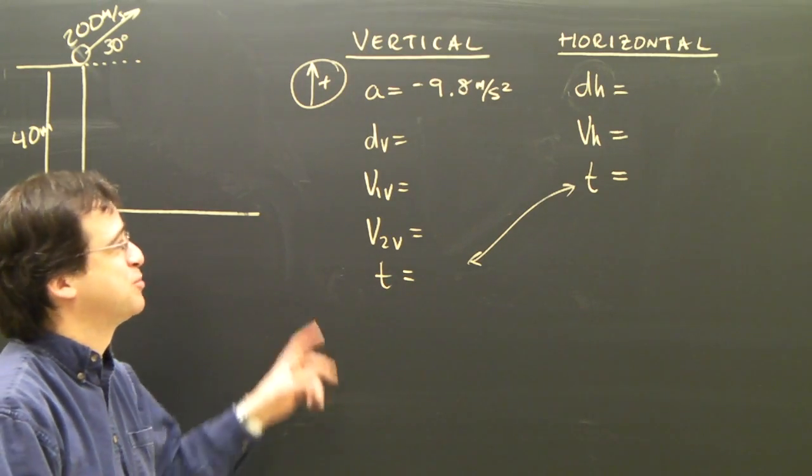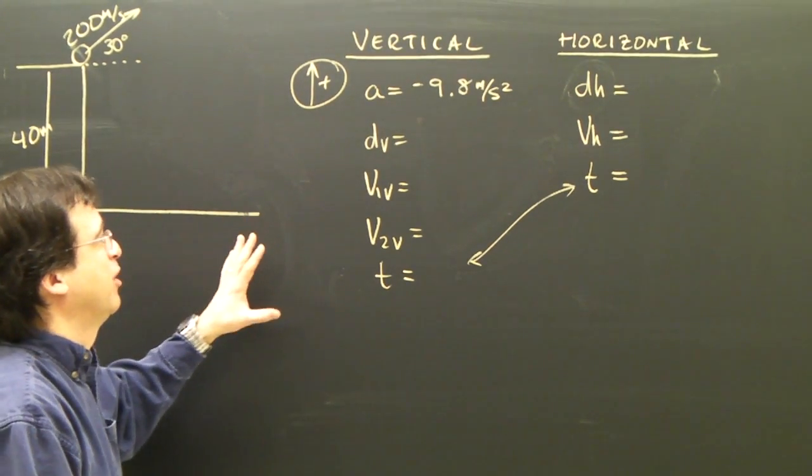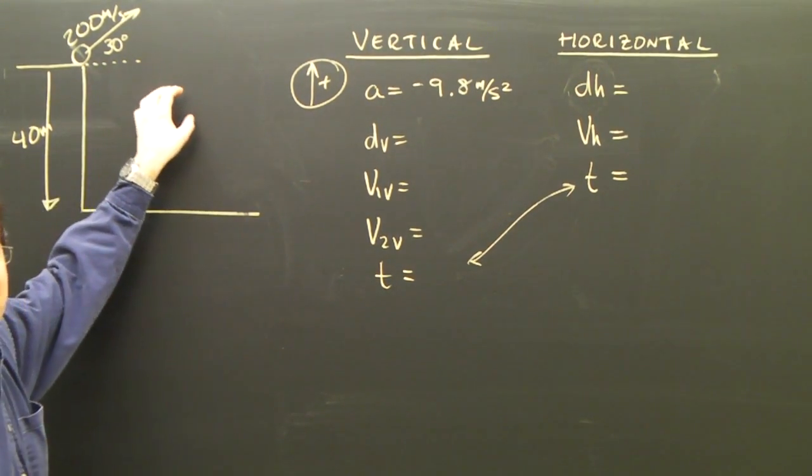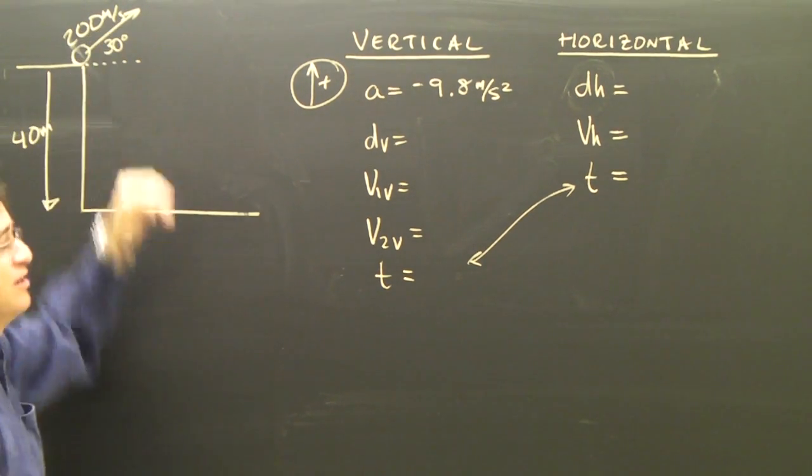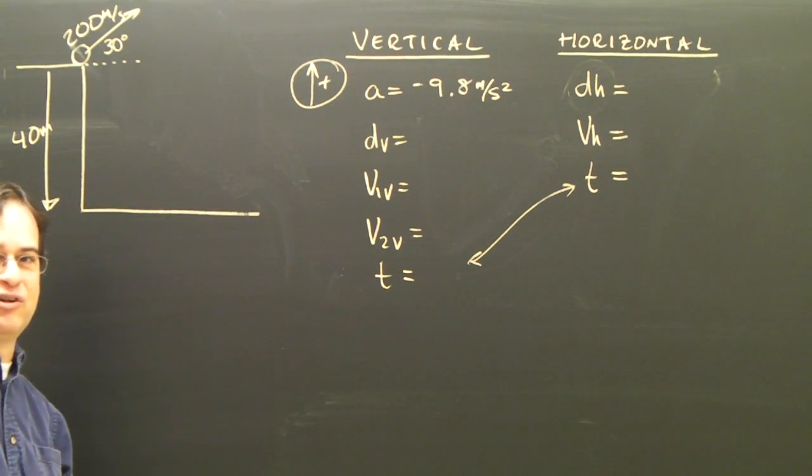Okay, you've looked at the first projectile problem. In part two, what I'm going to do is a very similar problem, but this time the 200 meters per second is at 30 degrees.